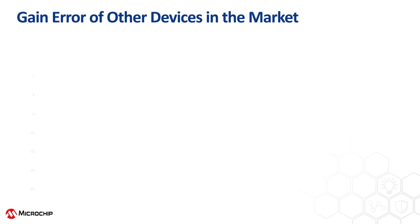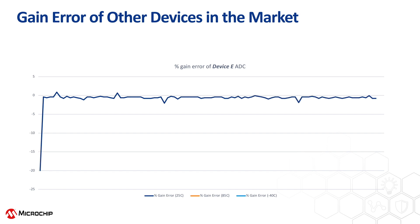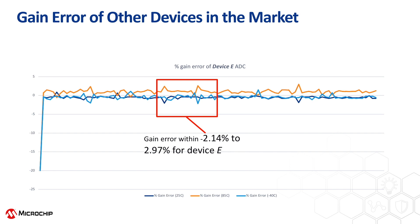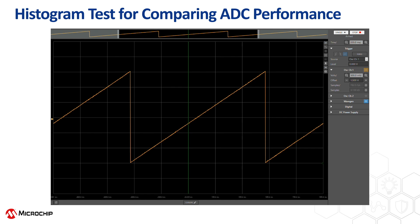The results of other devices in the market with similar spec and functionality are not even comparable. As you can see here, the percentage error in other devices in the market ranges between negative 2.14% and 2.97% across the spec temperature range. The error also varies from device to device, which makes it difficult to compensate in software.